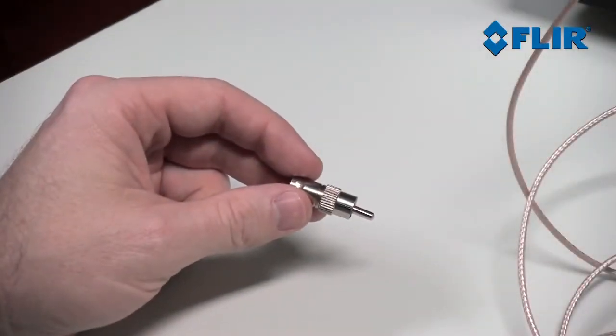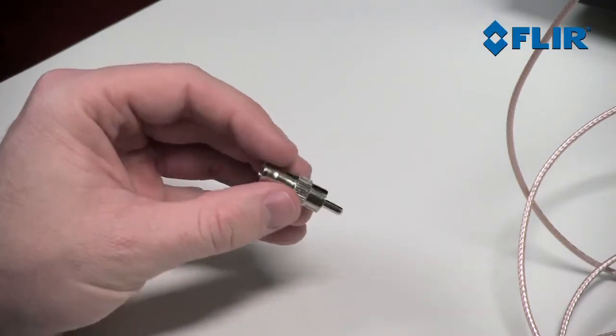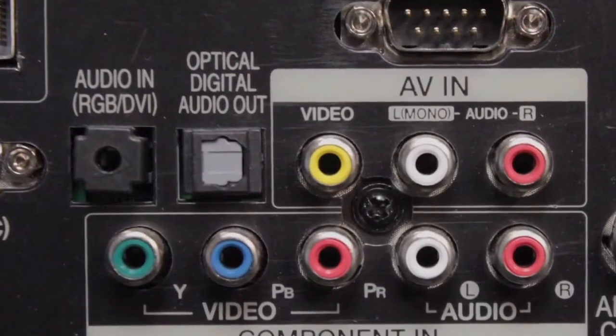You may need an RCA adapter, these are available at any electronics store, and allow the camera to be connected to the standard yellow video input on a monitor.